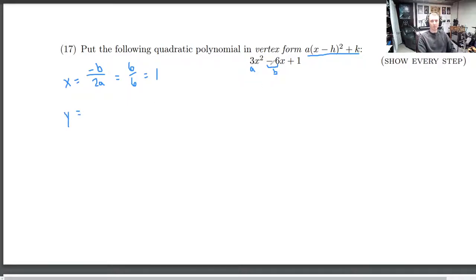So what is the y coordinate now? Well, that's what you get when you plug it in. So this is 3 times 1 squared minus 6 times 1 plus 1. So the y coordinate is 3 minus 6 plus 1, which is negative 3 plus 1, negative 2. So our vertex has the coordinates h, k equal to 1, negative 2. So we're most of the way there, aren't we?